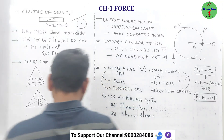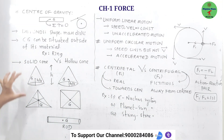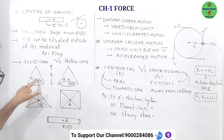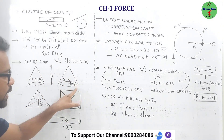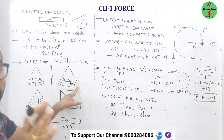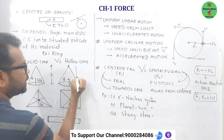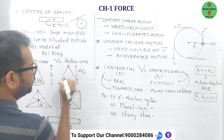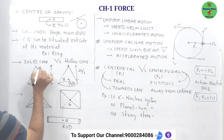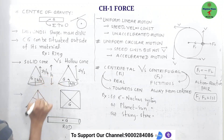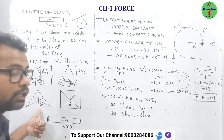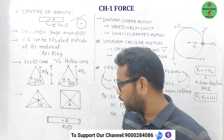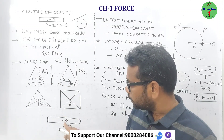Let us see a few examples of center of gravity, especially from an examination point of view. Center of gravity of a solid cone from its base is h by 4, whereas center of gravity of a hollow cone from its base is h by 3. Sometimes they ask from the vertex: for a hollow cone it is 2h by 3, and for a solid cone it is 3h by 4 from its vertex. For a triangular lamina, it is the point of intersection of medians. For a square or rectangle, it is the point of intersection of diagonals. For a rod, the center of gravity is at its midpoint.